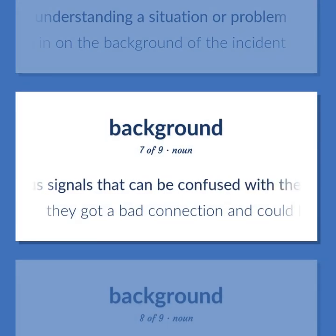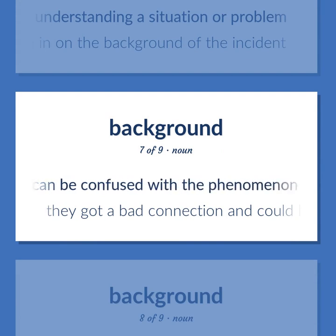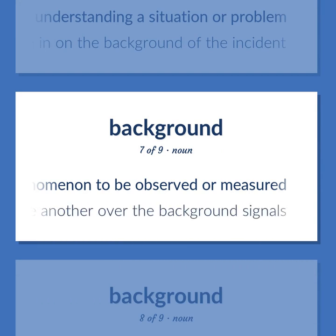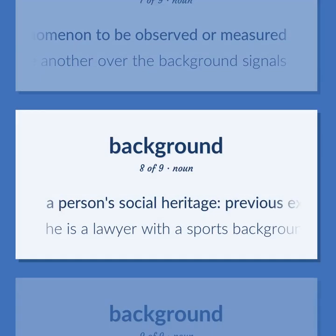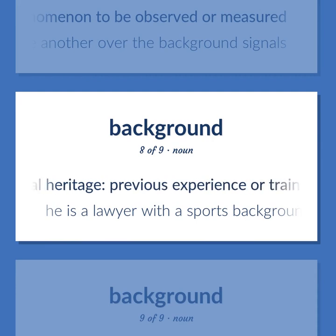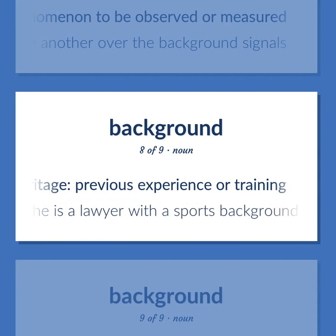Background: extraneous signals that can be confused with the phenomenon to be observed or measured. Example: they got a bad connection and could hardly hear one another over the background signals. Also: a person's social heritage; previous experience or training. Example: he is a lawyer with a sports background.